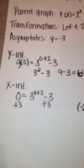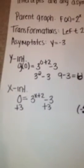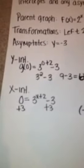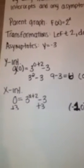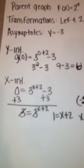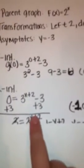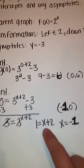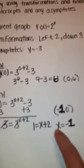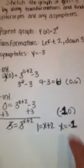For the x-intercept, you set the problem equal to 0, so 0 = 3^(x+2) - 3. Add 3 to both sides to get 3 = 3^(x+2). Since the 3s cancel out, you get 1 = x + 2, so x = -1. The x-intercept is (-1, 0).